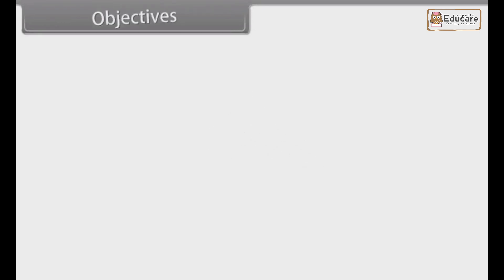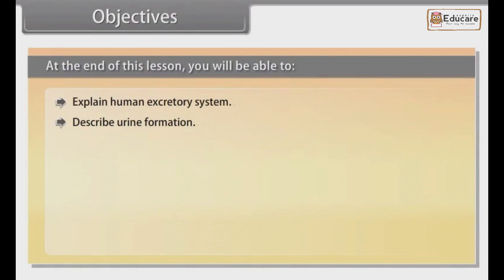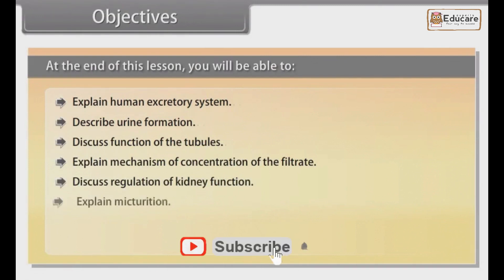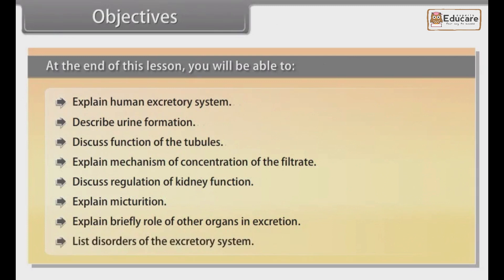Objectives: At the end of this lesson, you will be able to explain the human excretory system, describe urine formation, discuss functions of the tubules, explain the mechanism of concentration of the filtrate, discuss regulation of kidney function, explain micturition, explain briefly the role of other organs in excretion, and list disorders of the excretory system.